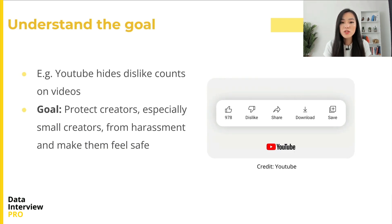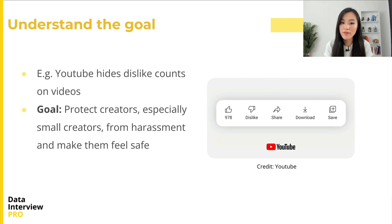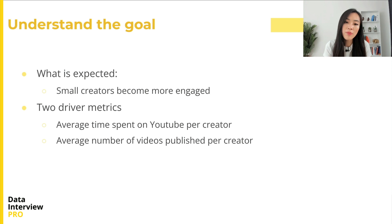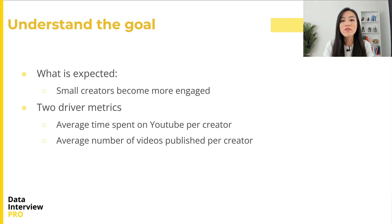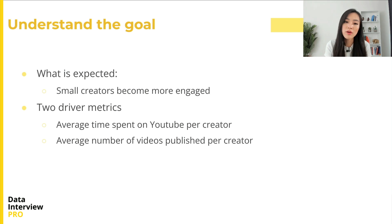Let's look at an example. In 2021, YouTube ran an experiment to test hiding dislike counts on videos. According to the company, the goal was to better protect creators from harassment, help ensure small creators and those just getting started can thrive, and create an inclusive and respectful environment. Assuming this feature change helps YouTube achieve this goal, we would expect to see small creators become more engaged, post more videos, and spend more time on the platform. So two possible driver metrics are the average time spent on YouTube per creator and the average number of videos published per creator. Ideally, both metrics will be larger in the treatment group than in the control group.